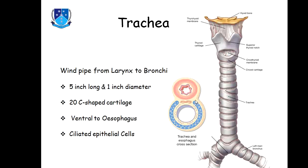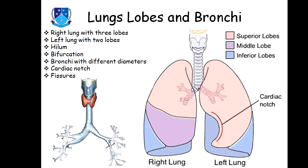An important clinical point: the right bronchus is somewhat straight while the left bronchus is somewhat oblique. Because the right bronchus has a larger diameter and is more vertical, the chances of microbes and infection entering the right lung are comparatively greater than the left lung.